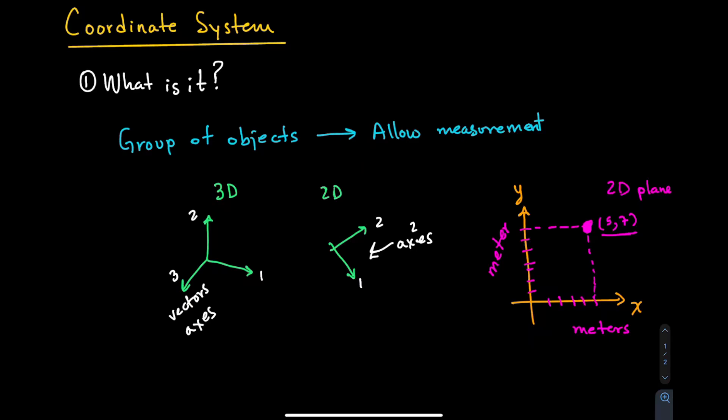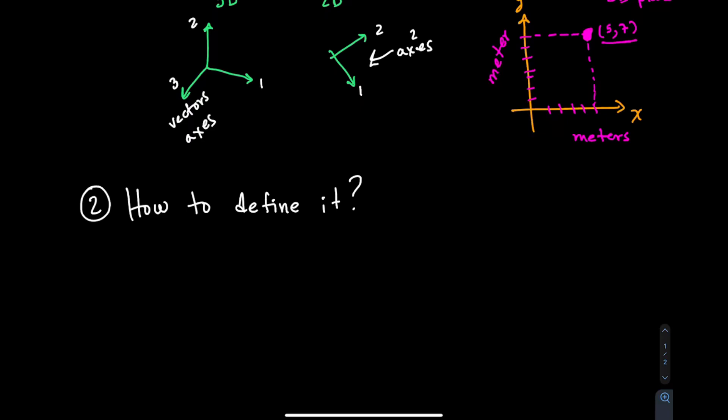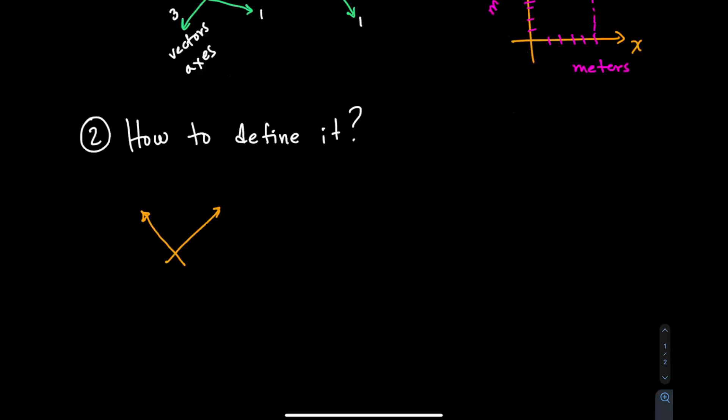How do we define our own coordinate system in a way that is useful for our problem? It is very common to find the coordinate system already defined for you, but in cases where you're working on your own project you'll need to define your own coordinate systems.